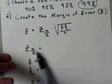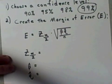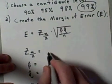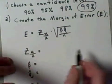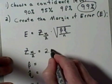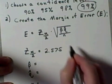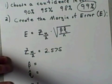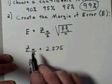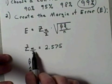Z sub alpha over two, because we chose 99%, is going to be how many standard deviations we have to go out in either direction, and that number is set at 2.575. That's just what it is for 99%. This is the critical value.